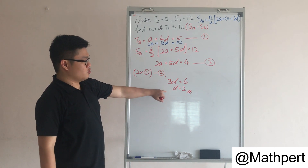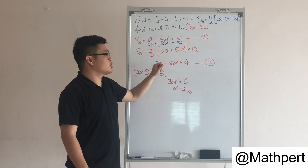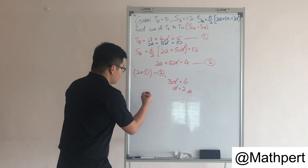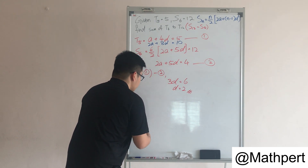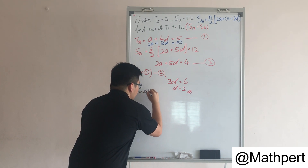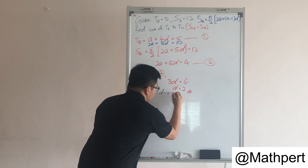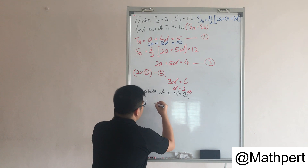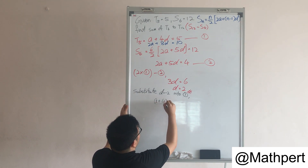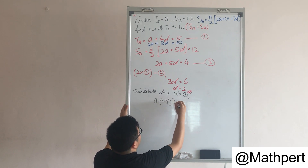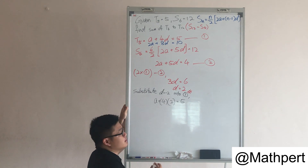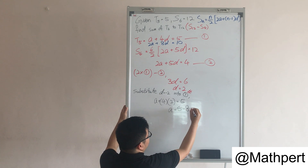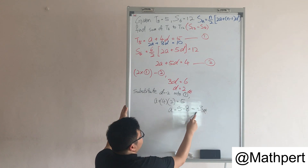So when d equals 2, we substitute into equation 1: a plus 4 times 2 equals 5, so a plus 8 equals 5. Moving 8 over, we get a equals 5 minus 8, therefore the first term a equals negative 3.